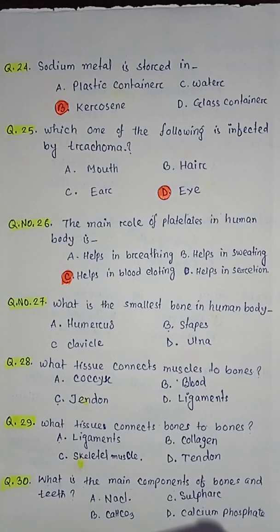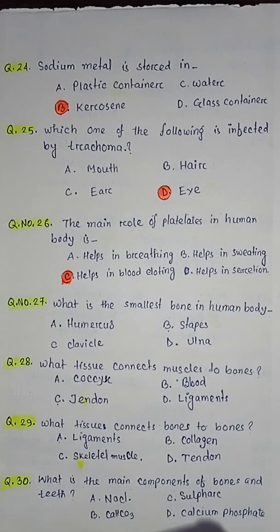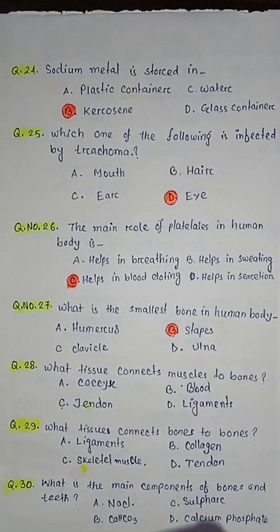Question number twenty-seven: what is the smallest bone in the human body — option A humerus, option B stapes, option C clavicle, option D ulna. So the correct answer is option B stapes.